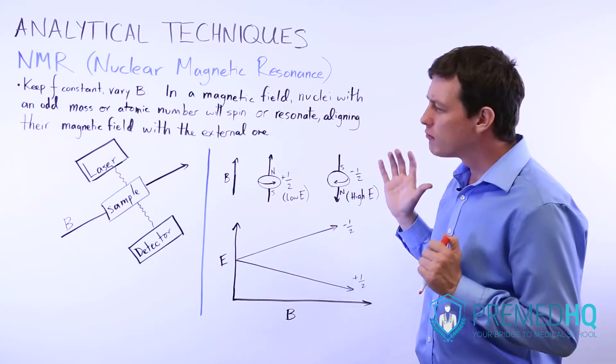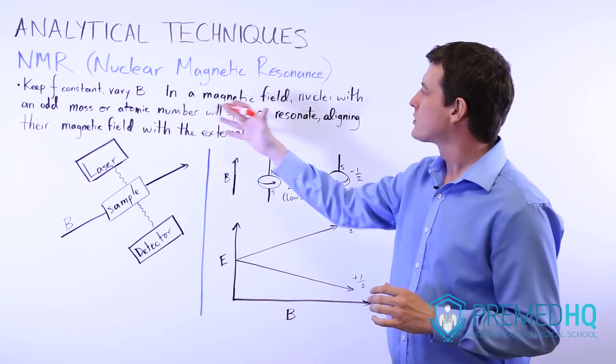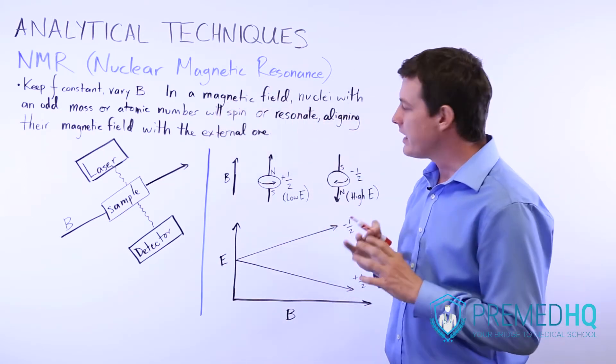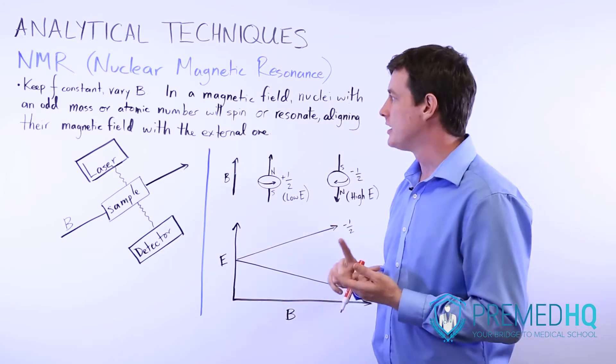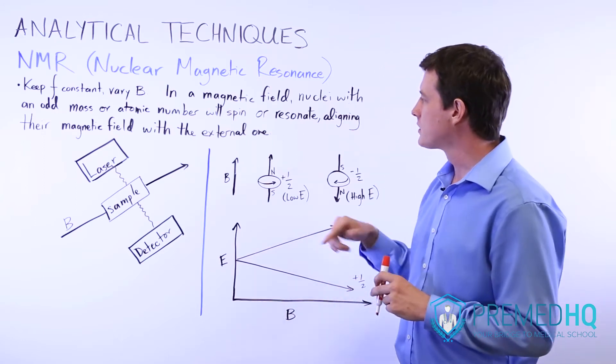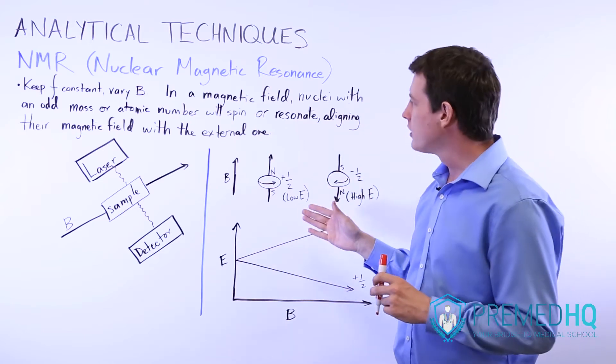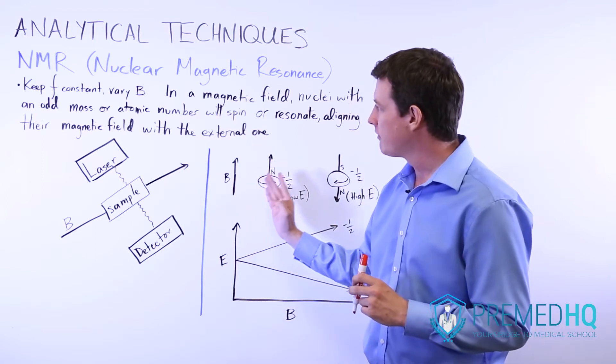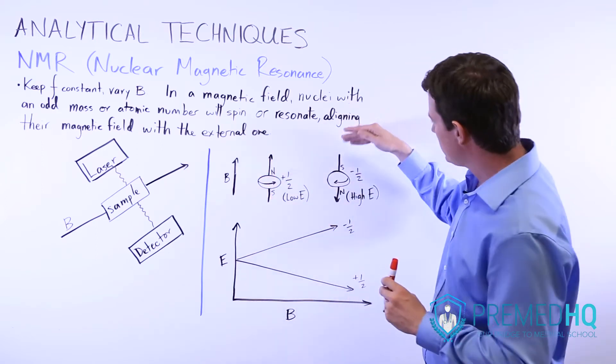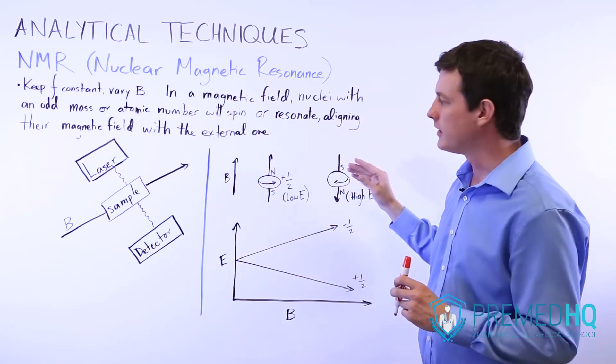And so the reason why NMR works is because in an external magnetic field any nucleus with an odd mass number or an odd atomic number is going to spin or resonate, and it will spin according to the right-hand rule in order to either match the external magnetic field or it will align its magnetic field against the external magnetic field.